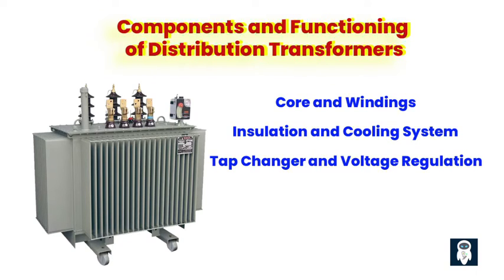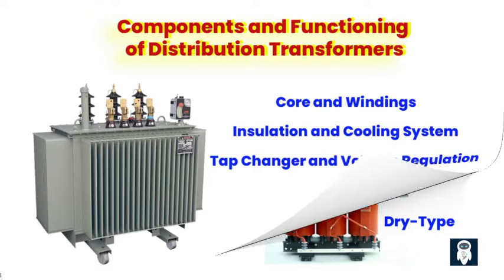To prevent any unwanted sparks or short circuits, distribution transformers are equipped with insulation materials that create a barrier between the windings and the core. This insulation is crucial for maintaining the safety and efficiency of the transformer. Additionally, distribution transformers have cooling systems such as fans or oil-filled radiators to prevent overheating. Distribution transformers also come with a tap changer, which allows for adjustments in the turns ratio of the transformer, thereby regulating the voltage output. When there are fluctuations in the incoming voltage, the tap changer ensures that the voltage reaching our devices remains stable and safe.